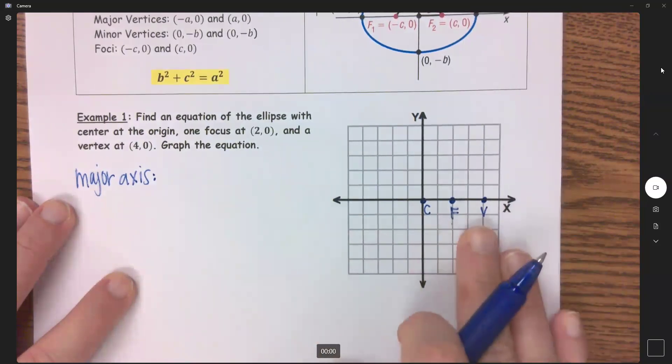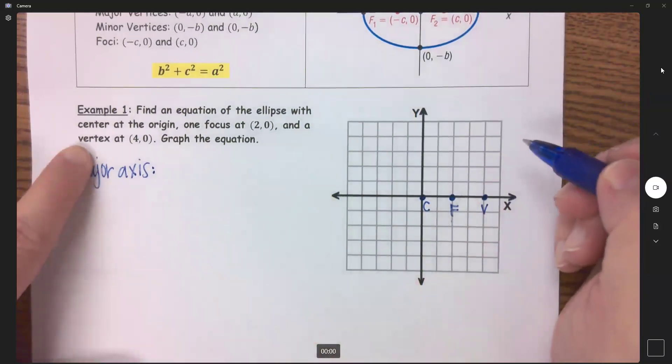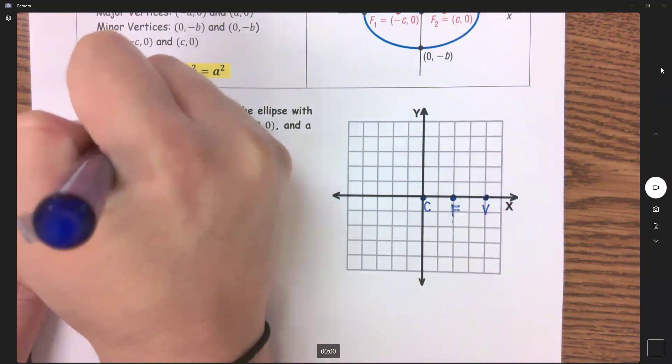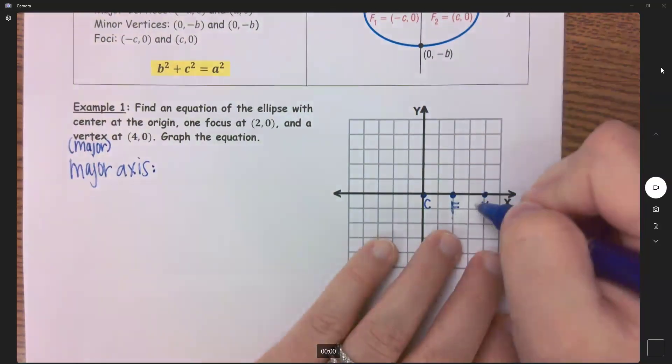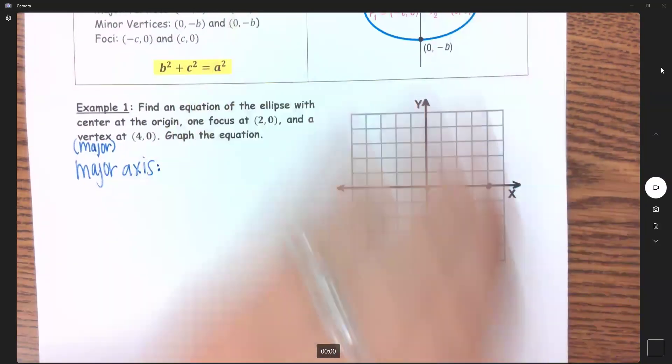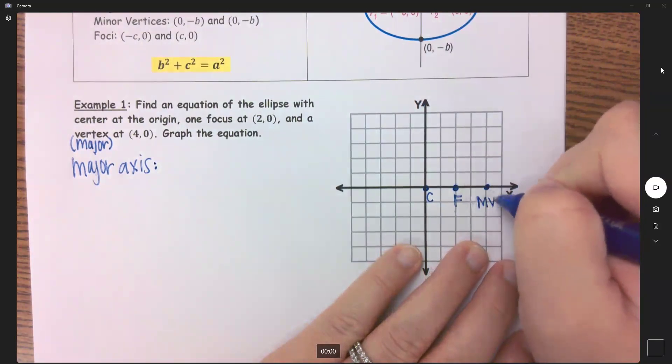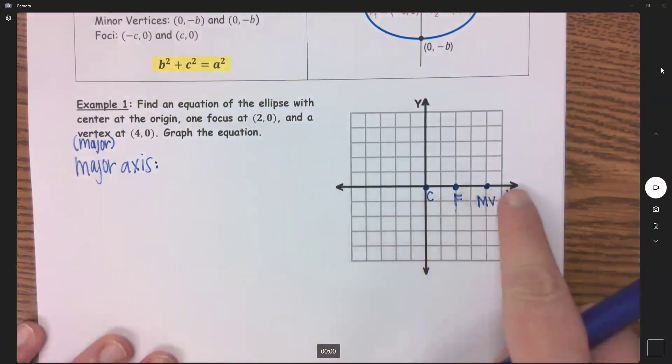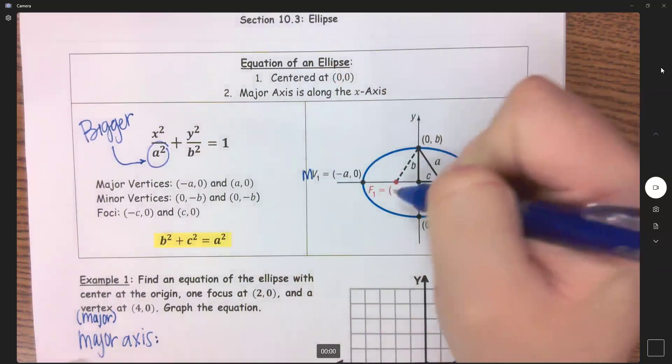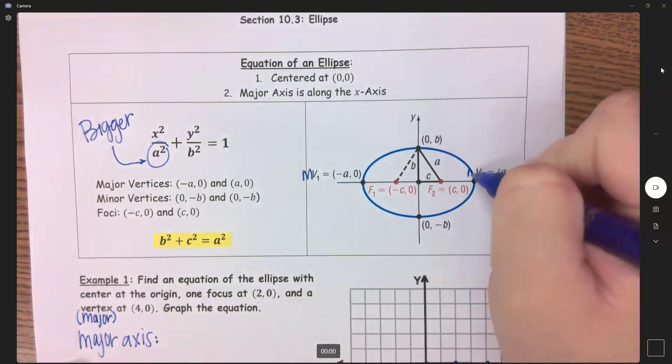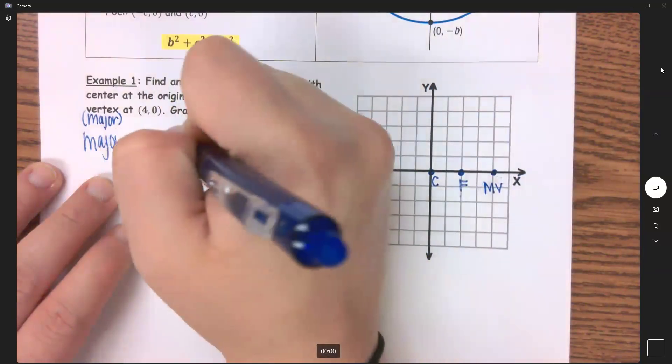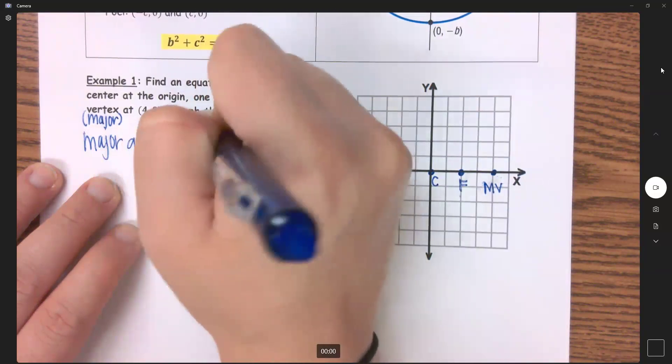So as you can see here, all of these points, your focus and your major vertices, so even though they only said vertex here, what they mean is major vertex. So this is actually my capital MV. So my focus, my center, and my major vertices will all be in a line, just like you can see right here. You've got major vertices, focus, center, focus, major vertices, all in a line. So that tells me right there that my major axis is the x-axis.